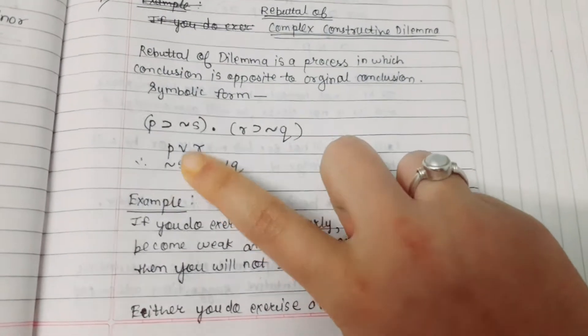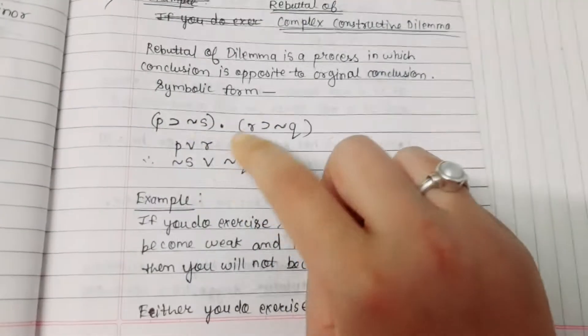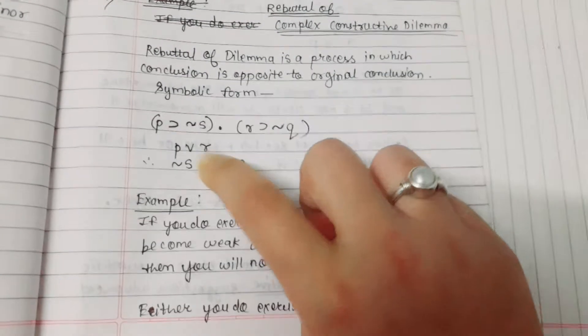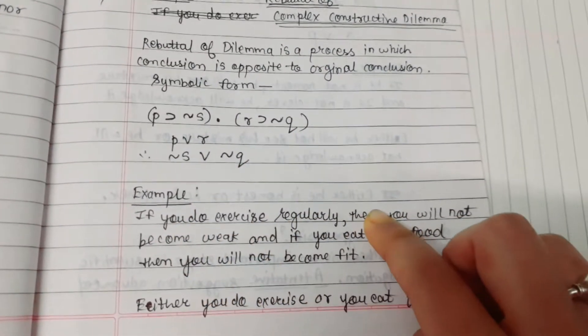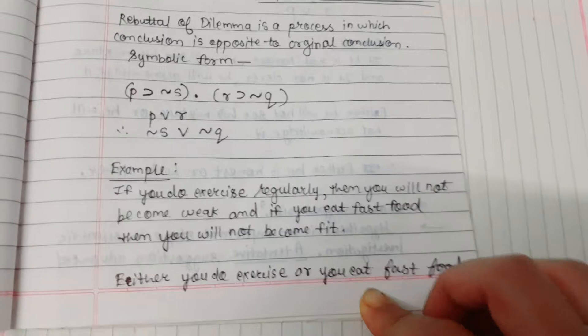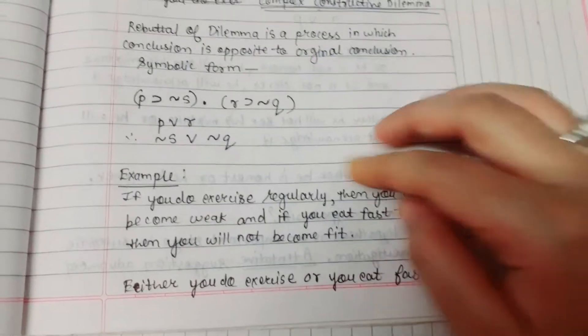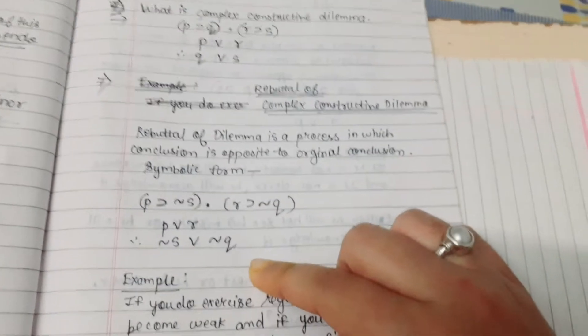So P or R means this is P. Either you do exercise or you eat fast food. And here negation S or negation Q.